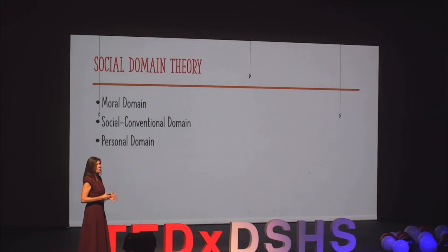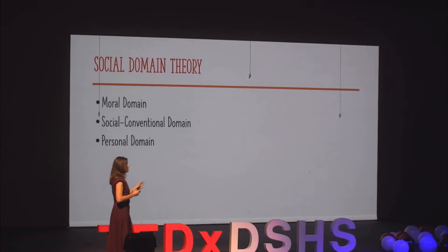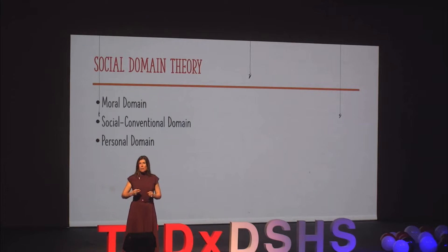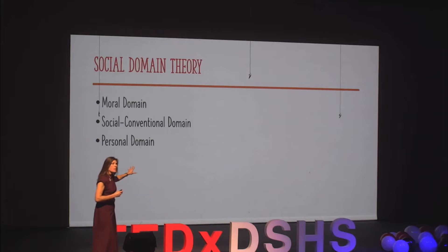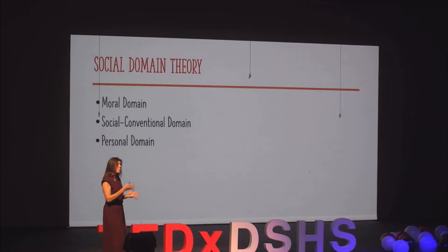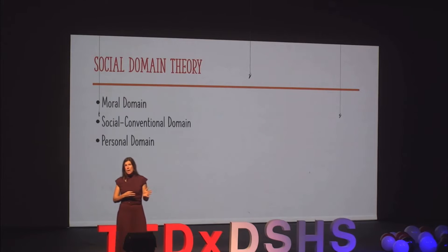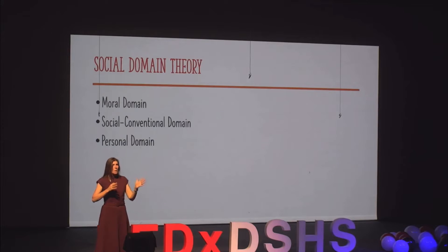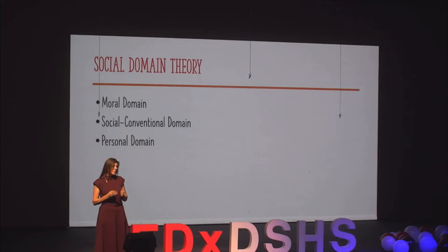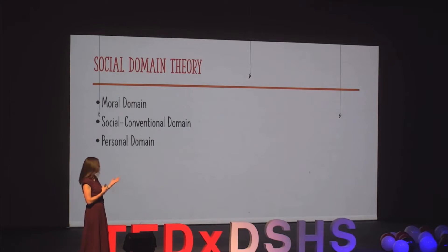Social domain theory argues that we can understand children's and adults' moral reasoning when we think about how actions or events occur in different social settings. It's really important to consider those social settings when thinking about how someone is going to interpret an action. Social domain theorists argue for three different domains or categories: the moral domain, the social conventional domain, and the personal domain.